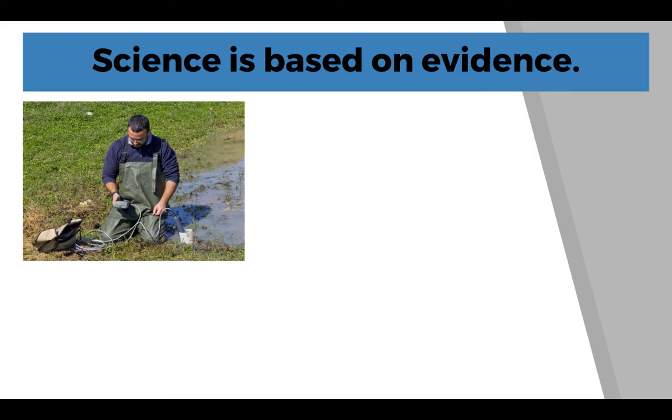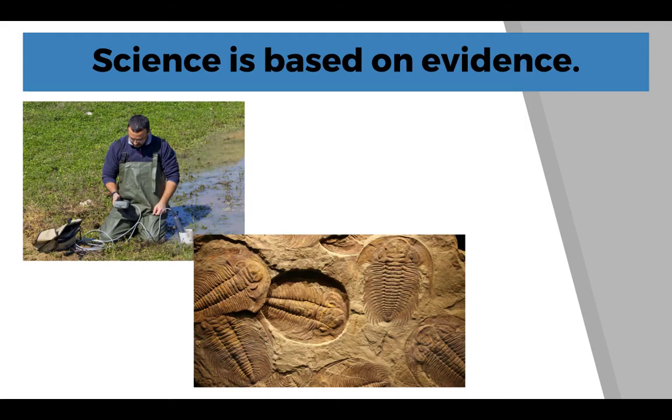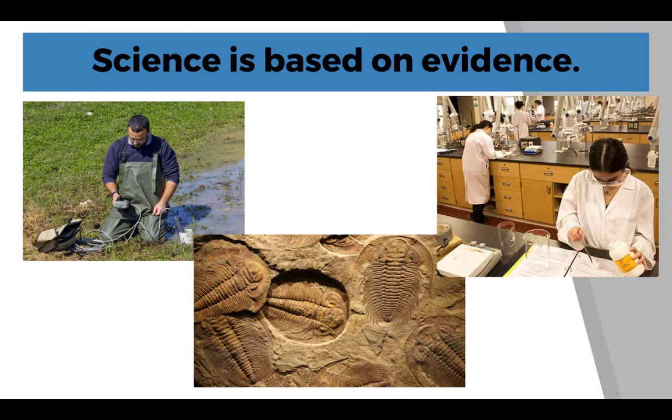You might collect evidence out in the field. So when a scientist works outside, it's out in the field, and you might collect data in real time. You might collect data about the past through fossils or other scientific tests. Or you might collect data in what you typically think of as science in a lab. This is a chemistry lab.